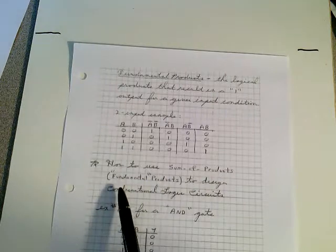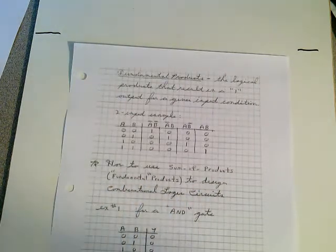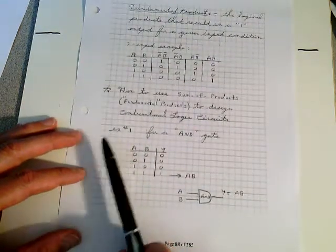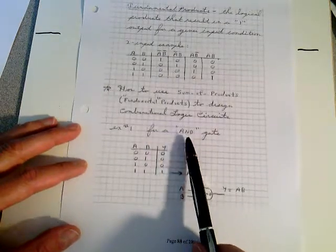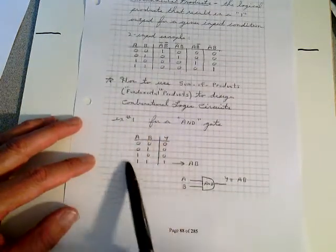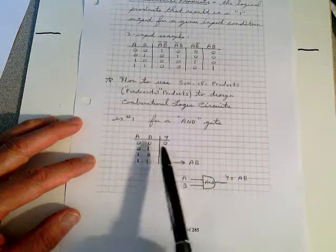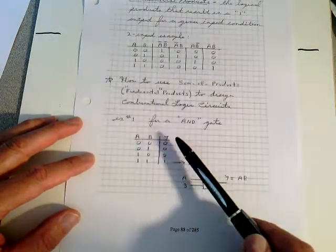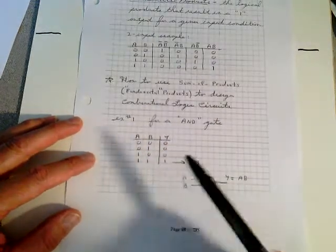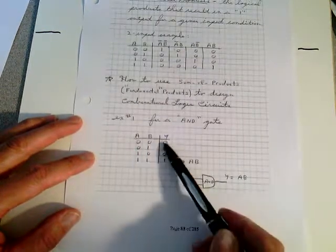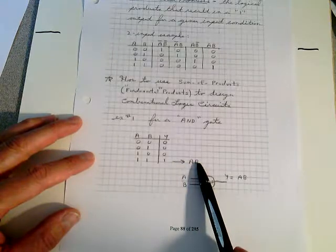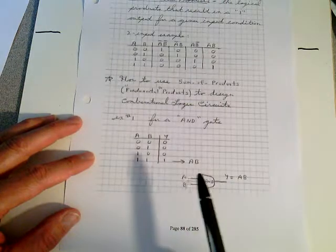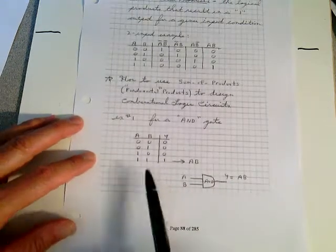How to use the sum of fundamental products to design combinational logic circuits. Here's three quick examples. Example number one. Let's say we want to produce a truth table. Our specification says we want to produce an output that looks like this. Well, it's obviously an AND gate. But let's say you don't know that. We want to produce a circuit that will generate an output only when both of the inputs are at a high state. Well, that fundamental product is A-B. And there it's implemented. A-B. Through the AND function. Matter of fact, this is so simple, it's pretty confusing.